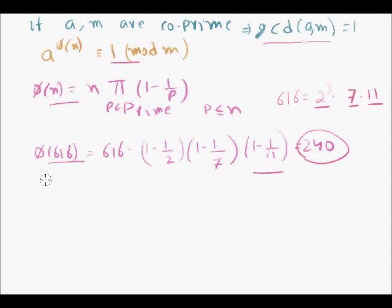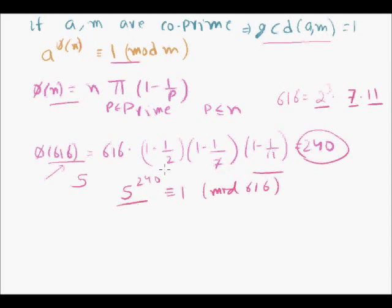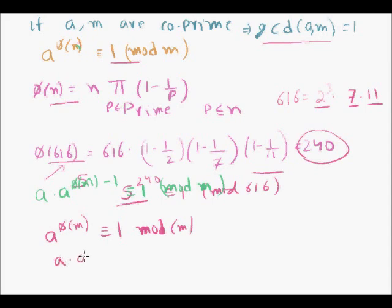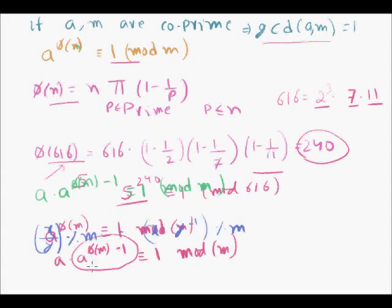For example, take a = 5 (which is coprime to 616): then 5^240 mod 616 = 1. Using Euler's theorem to find the multiplicative inverse: since a^φ(m) ≡ 1 (mod m), we have a × a^(φ(m)−1) ≡ 1 (mod m), so a_inverse = a^(φ(m)−1) mod m.